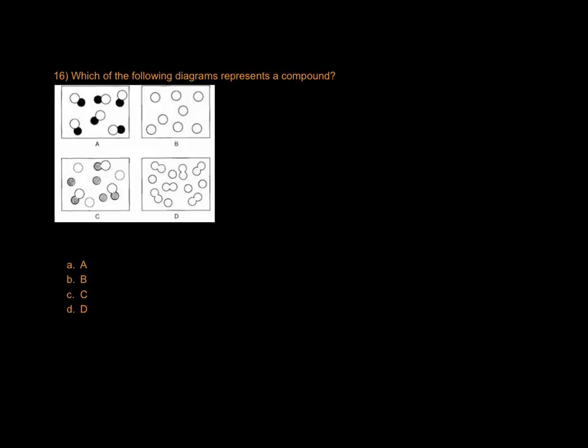Which of these diagrams represents a compound? A compound has to have two types of elements and they must be bonded together chemically in a consistent way. This is an element. This looks like an element as well because they all have the same shading. This one is a mixture of atoms and molecules of different compounds. This is the only one that has a consistent composition, one black, one white. So that would be answer choice A.